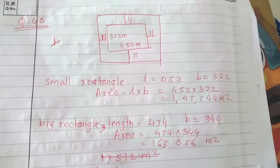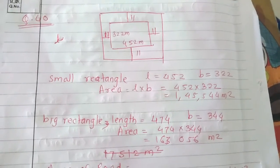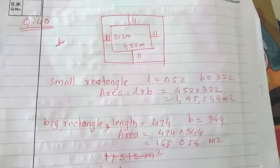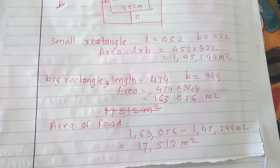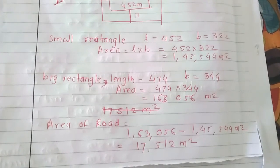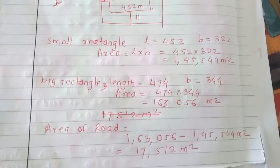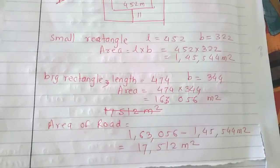To find the area of the road we subtract the area of smaller rectangle from the bigger one. The area of the road will be 163,056 meter square minus 145,544 meter square.